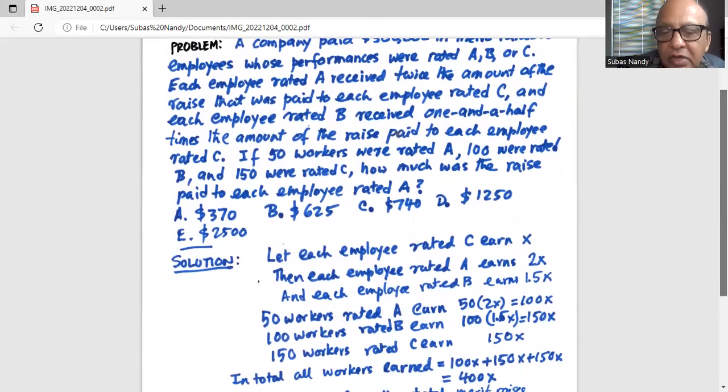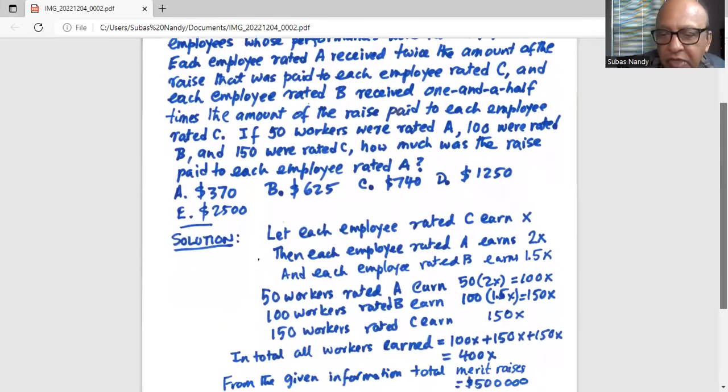Hence, the total merit raises for all the workers is 100X plus 150X, that's 150X, which is 400X.